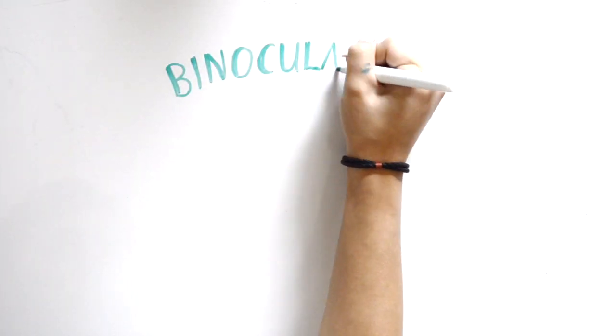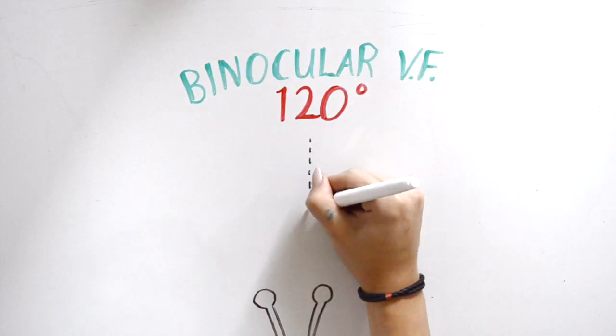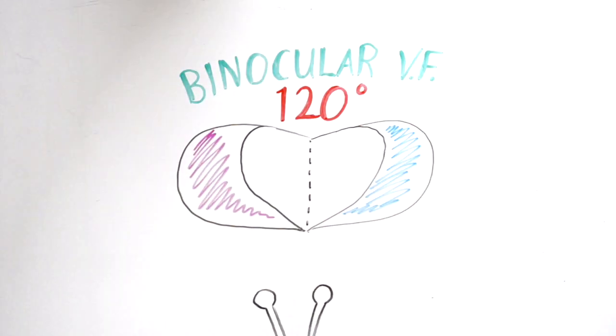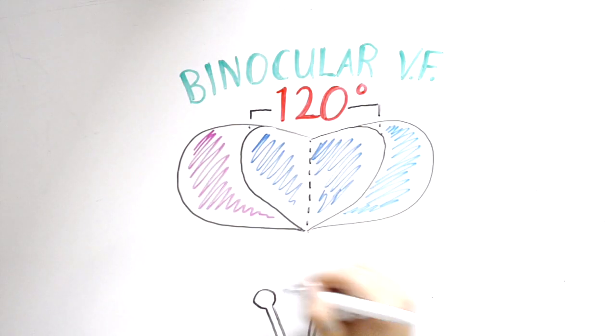The binocular visual field is 120 degrees due to the 60 degree overlap of the nasal visual field of the left and right eye.